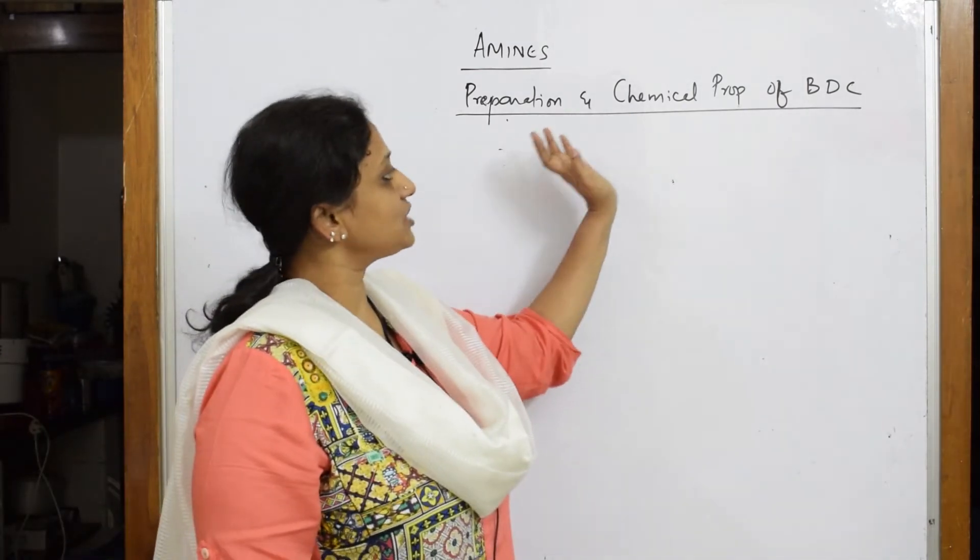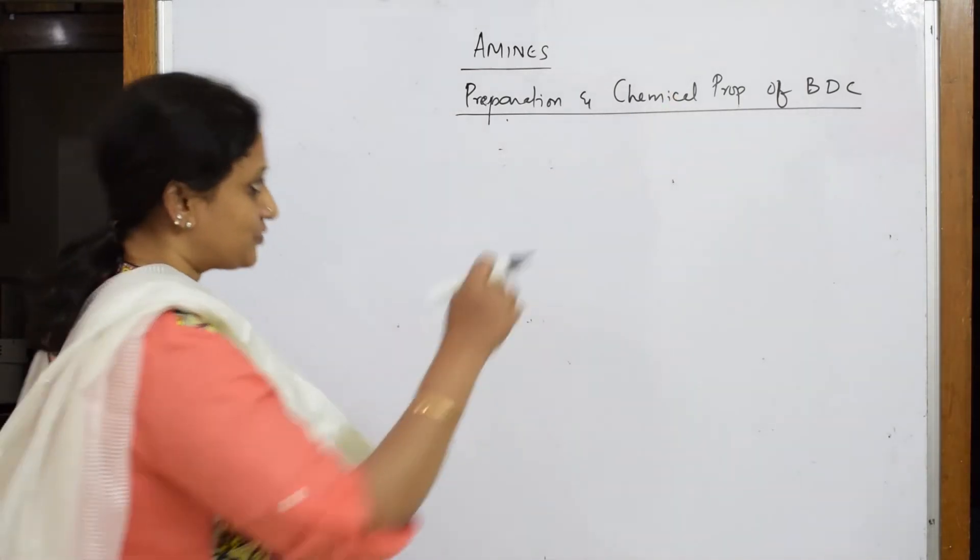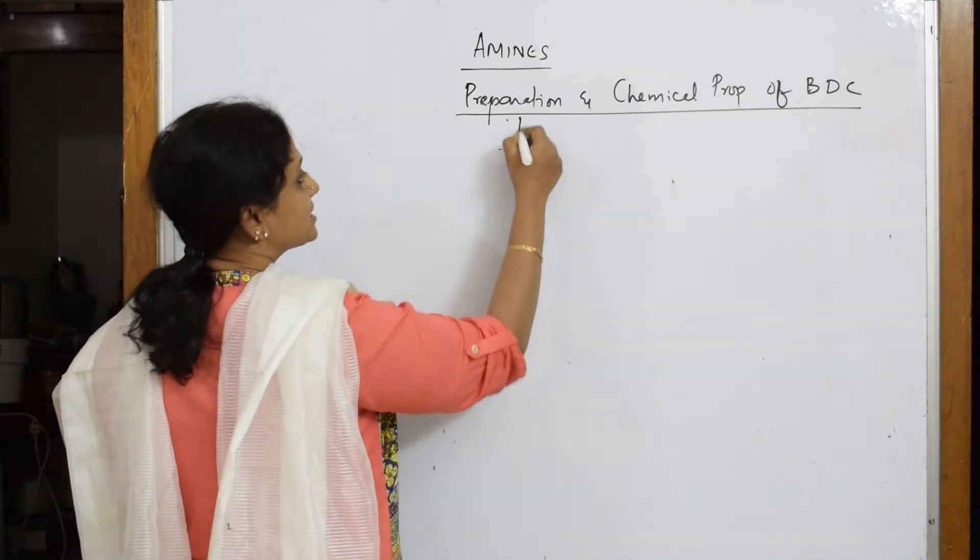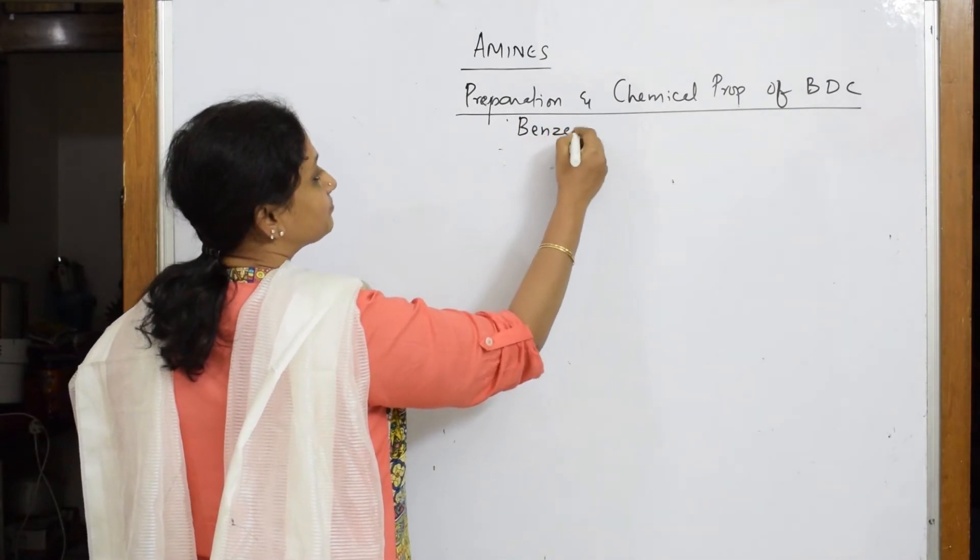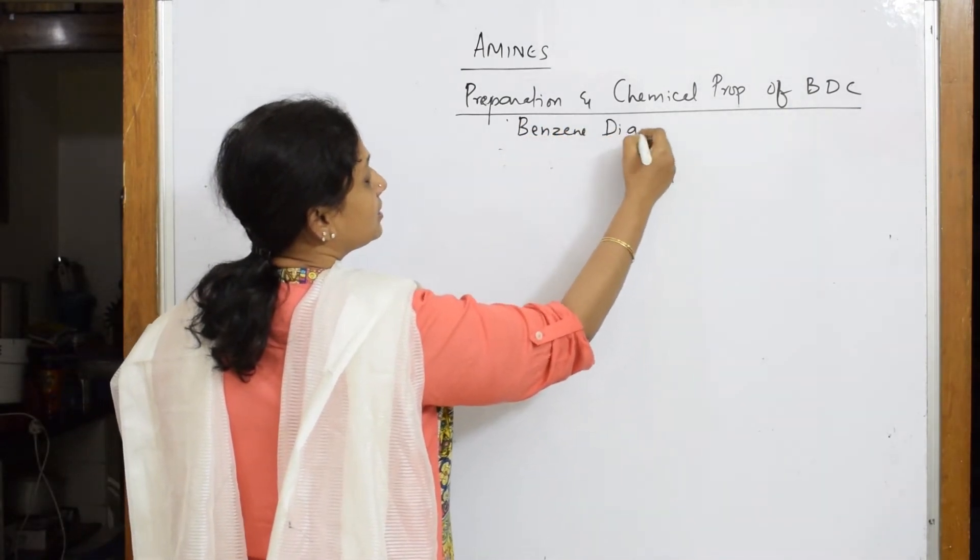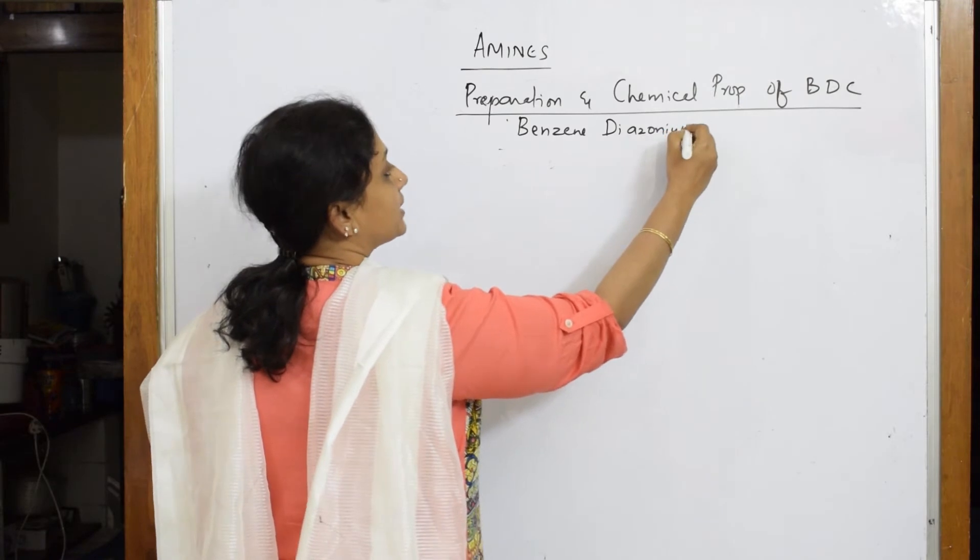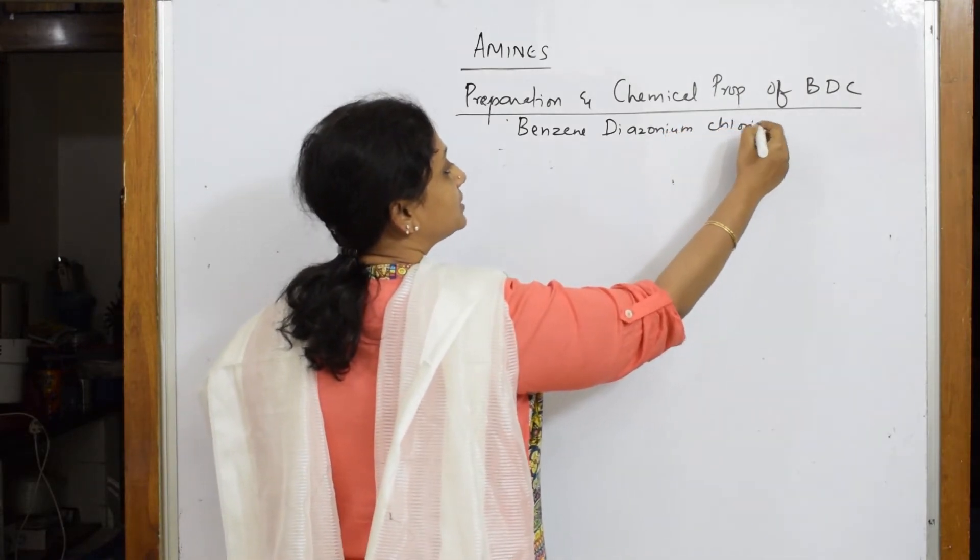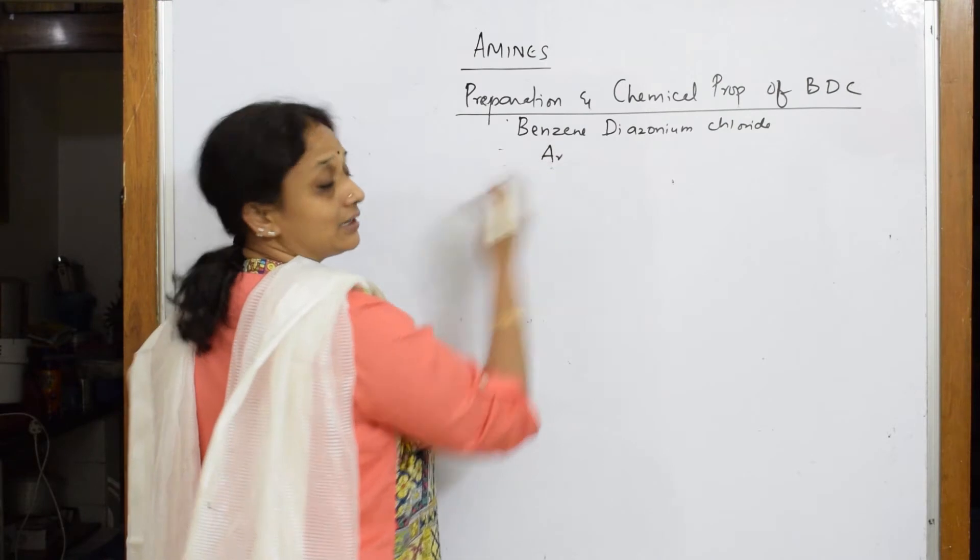First let us write the full form. BDC stands for benzene diazonium chloride. What is the formula for this? Benzene aromatic ring, so I write Ar.